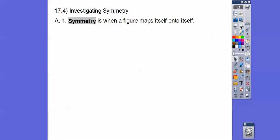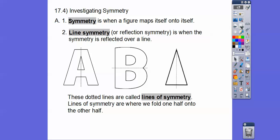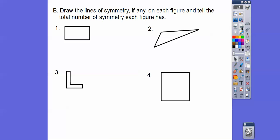Symmetry is when a figure maps itself onto itself. Line symmetry, or reflection symmetry, is when the figure is reflected over a line and it looks like a mirror image. For example, these figures have line symmetry and the dotted line is our line of symmetry — we can fold one half over onto the other half.